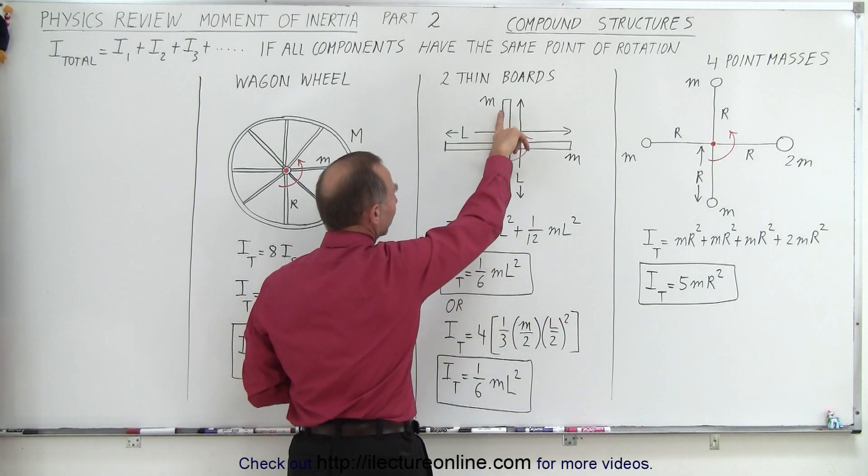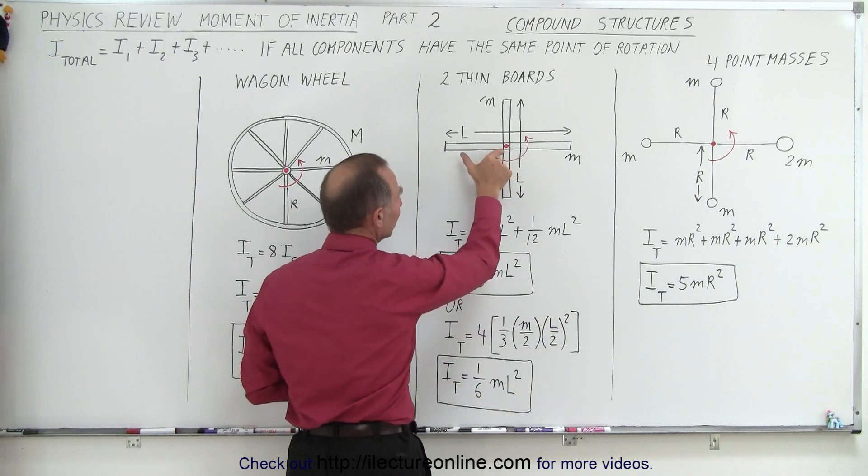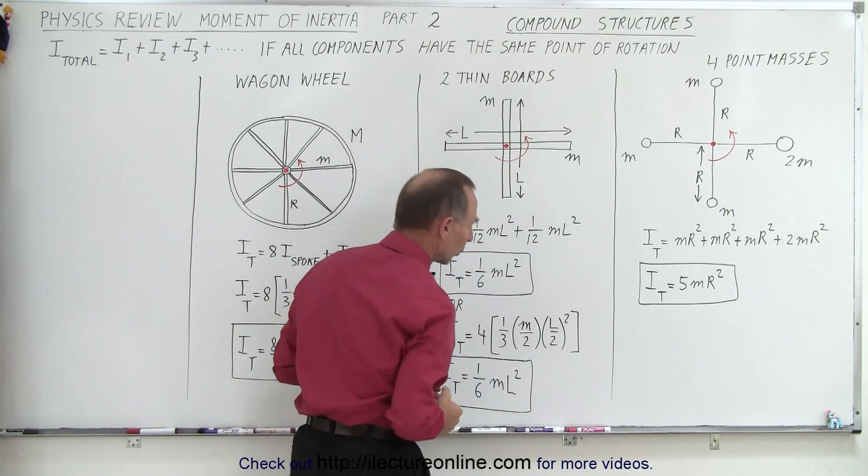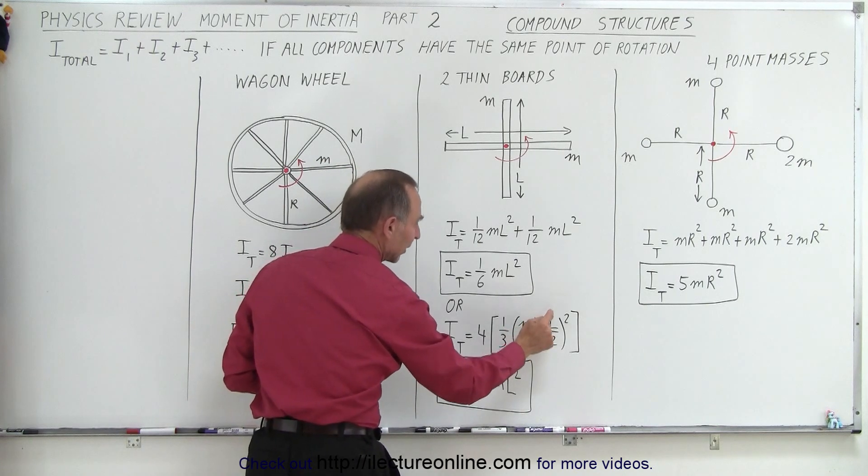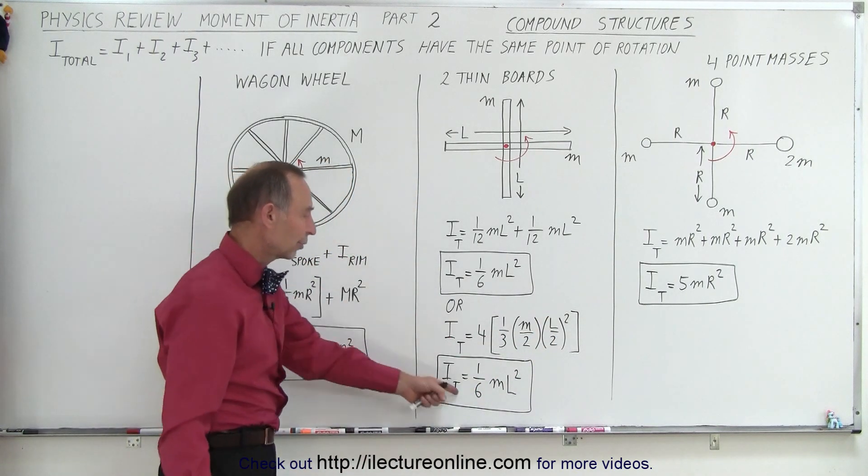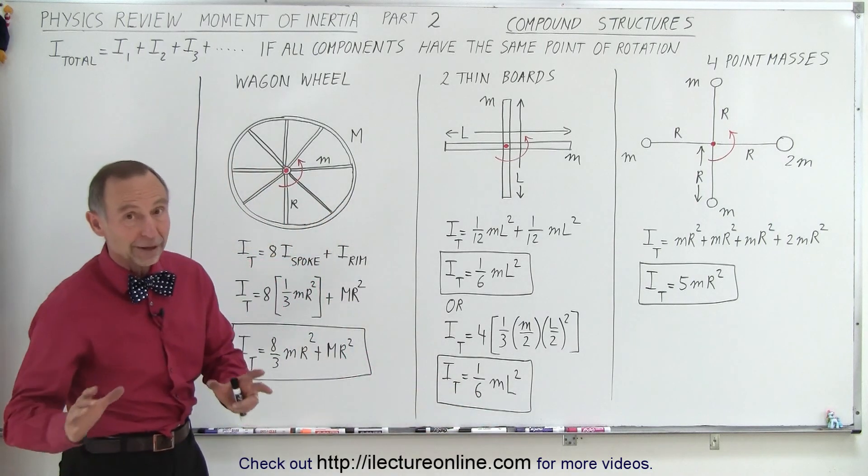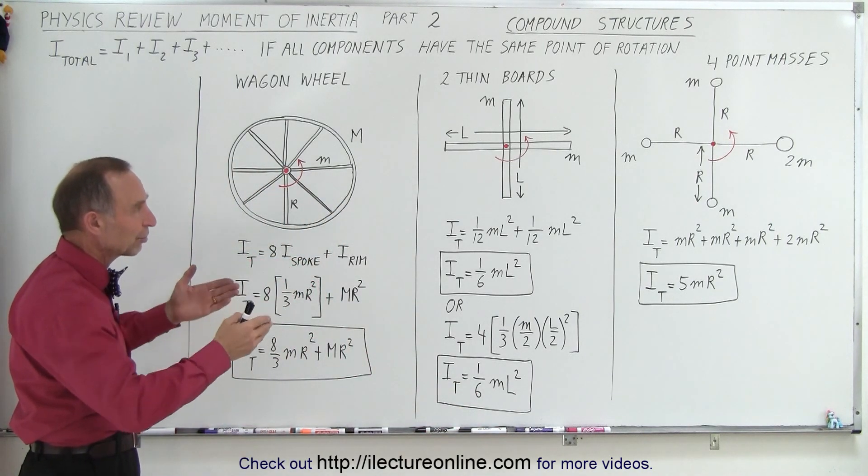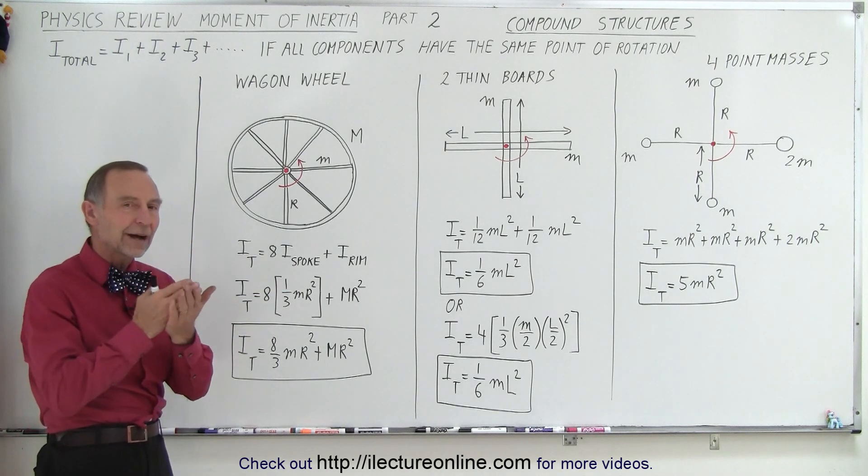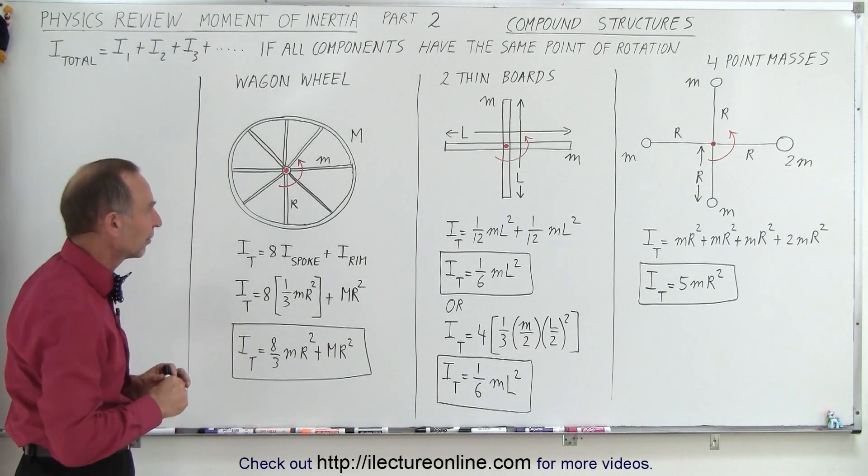Now, the mass of each piece would be half the mass of the total board, and the length of each piece would be half the length of the total board. And so therefore, we have 1/3 the mass m over 2 times the length l over 2 quantity squared. And of course, you get the exact same answer. You better get the exact same answer. And so again, it's simply a summation of how you want to divide the compound structure into individual pieces.